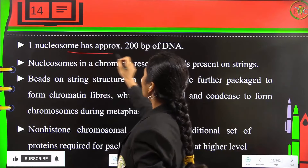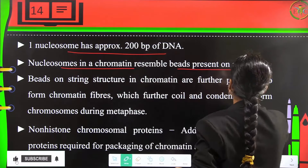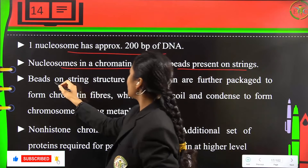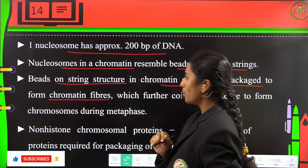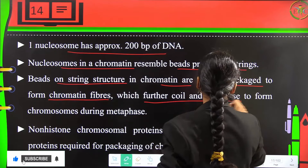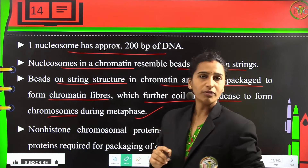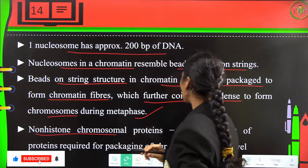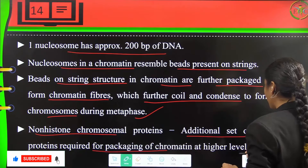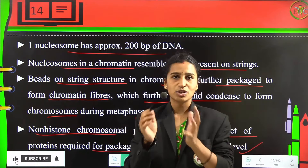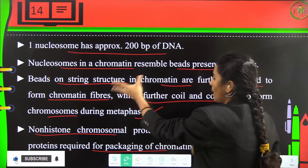One nucleosome has approximately 200 base pairs of DNA. Nucleosomes in chromatin resemble beads on a string. The beads-on-a-string structure in chromatin is further packed to form chromatin fibers, which coil further and condense to form chromosomes at the time of metaphase. Non-histone chromosomal (NHC) proteins are an additional set of proteins required for packaging of chromatin at higher levels.